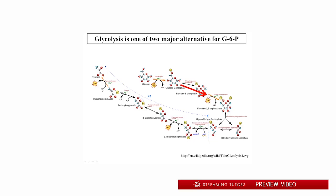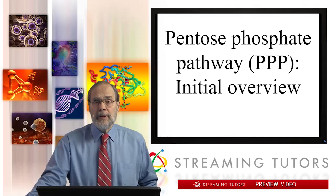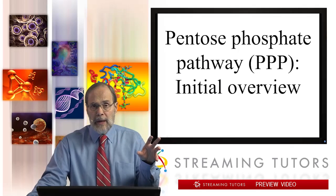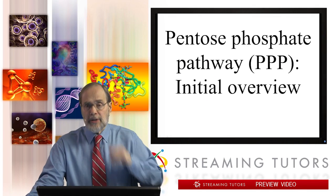The pentose phosphate pathway, or shunt, branches off from glycolysis at glucose 6-phosphate. So in other words, it's an alternative fate that glucose 6-phosphate can pursue. So let's look at the economics of this, and then let's start digging into the details.